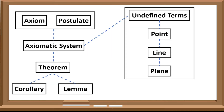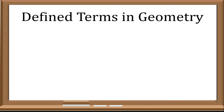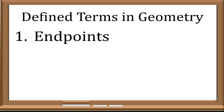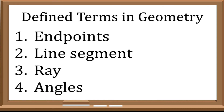Let us go back to the structure. Because of these undefined terms — which are point, line, and plane — we can create the defined terms. Here are examples of defined terms: endpoints, line segment, ray, and angles. Because of the undefined terms, these defined terms were formed. Let us define these defined terms and understand them more.